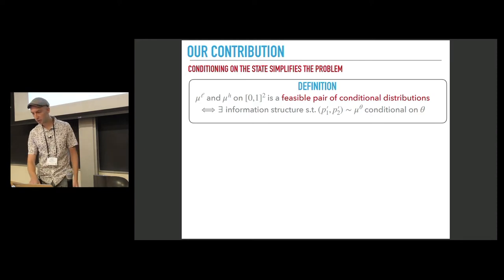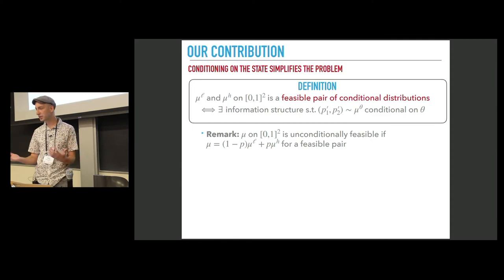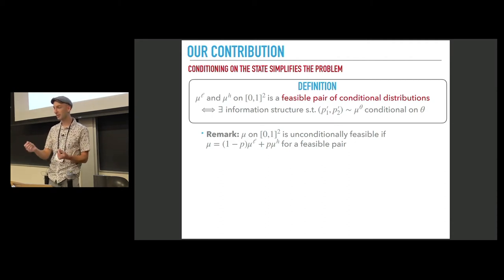So how this notion is related to the unconditional feasibility? The relation is simple. A distribution on the unit square is unconditionally feasible if it can be represented as a convex combination of the elements of a feasible pair with weights given by the prior. So this representation is just the formula of total probability.